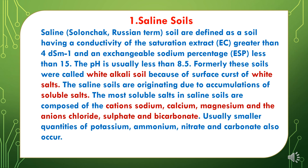The first problem soil we will discuss is saline soils. In Russian terms it is called Solonchak. Saline soils are defined as a soil having electrical conductivity of the saturation extract EC greater than 4, and exchangeable sodium percentage ESP less than 15. The pH is usually less than 8.5. Formerly these soils were called white alkali soils because of a surface crust of white salts. The most soluble salts in saline soils are composed of cations sodium, calcium, magnesium and anions chloride, sulfate, and bicarbonate. In smaller quantities, potassium, ammonium, nitrate and carbonates also occur.